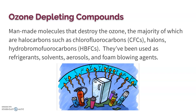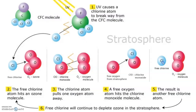These molecules float up into the stratosphere. This example has a CFC — it's got carbon, one fluorine, and three chlorines. They can break apart because of UV radiation, which breaks a lone chlorine away. That chlorine will then go and bond to one oxygen in the O3 molecule, forming chlorine monoxide and a diatomic oxygen molecule.